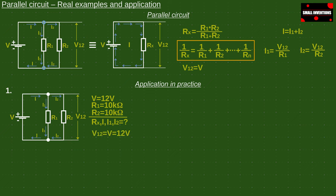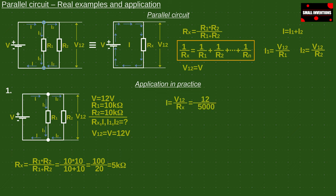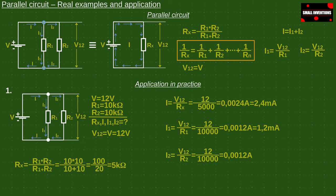First we calculate the total resistance. Then the total current I. Then the currents I1 and I2. Finally we add the currents I1 and I2 and we have to get the same result. This is proof that we have calculated everything well.